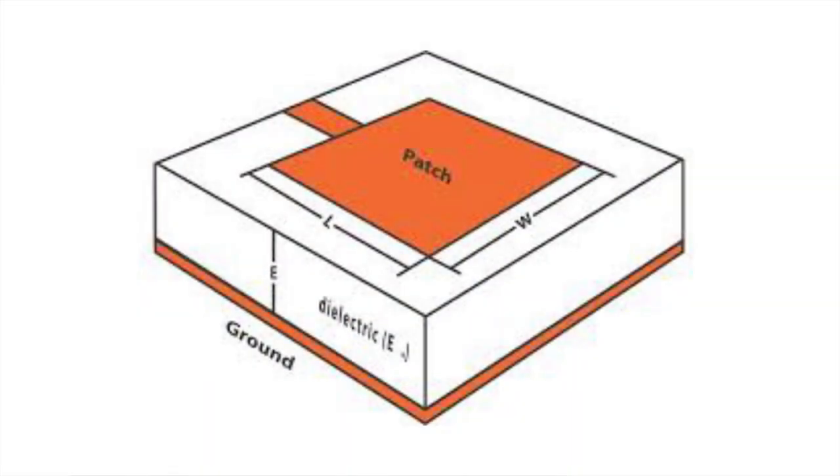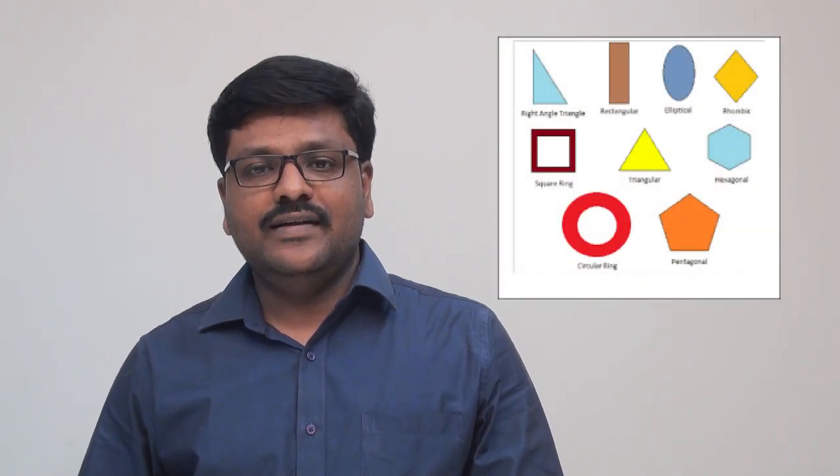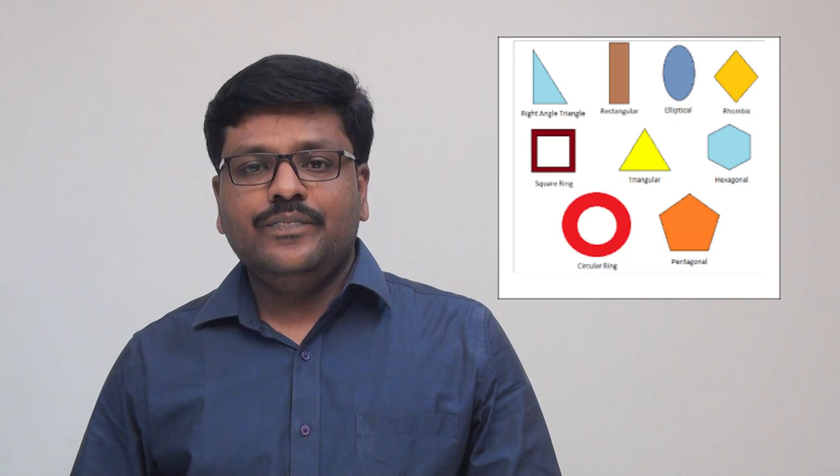Microstrip patch antenna mainly consists of a radiating patch, ground plane, and in between radiating patch and ground plane there is a dielectric substrate. Depending upon the application, various shapes of patches are designed like circular, rectangular, square, triangular, and elliptical.